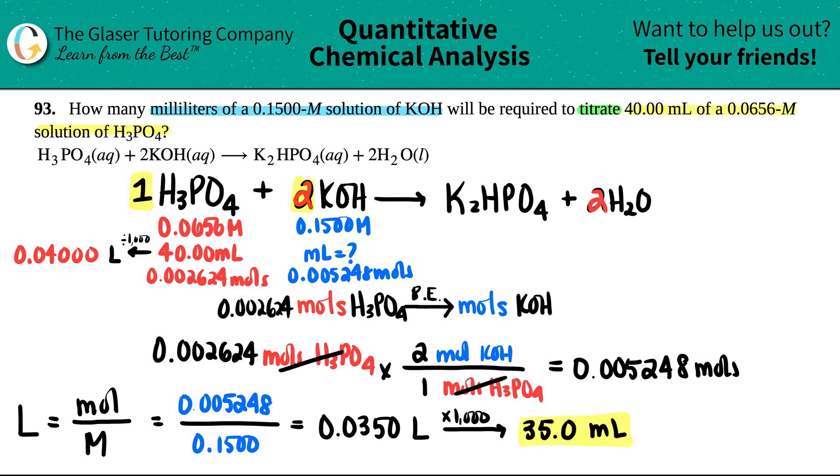And there you go. So how many milliliters of this solution of KOH will be required to neutralize or titrate this amount of phosphoric acid? I only need 35 mils. That's it, guys. I really hope this helped. Let me know in the comments. Thank you so much for tuning in, and tell your friends. Tell your classmates about this cool channel and service. I really hope I'm helping you guys out, and I'll see you all in the next lessons. Have a great day, bye-bye.